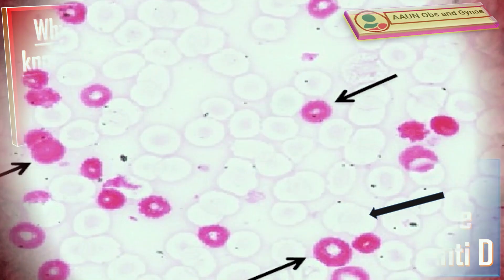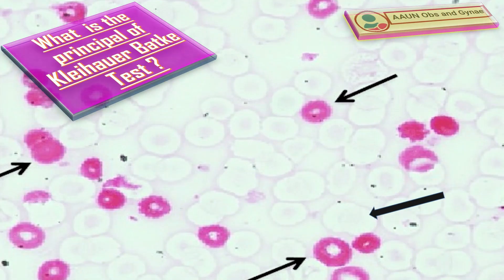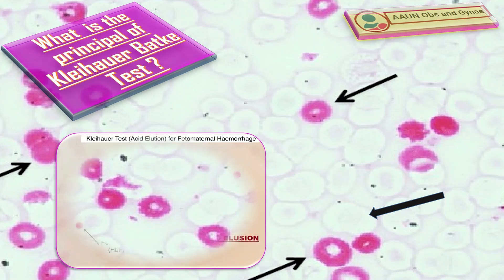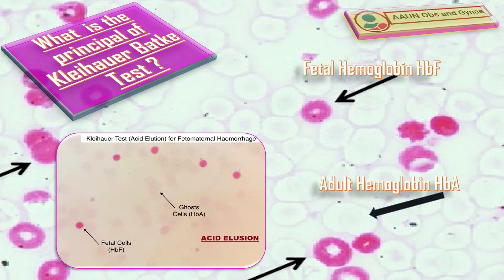The basic principle of the Kleihauer-Betke test is acid elution, meaning the acid will cause the destruction of adult hemoglobin but not fetal hemoglobin. The fetal hemoglobin HbF is resistant to acid and alkali as compared to adult hemoglobin HbA.